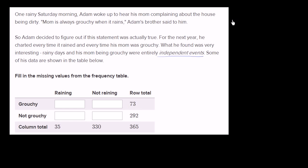Another way of saying that is the probability that mom is grouchy given it is raining should be equal to the probability that mom is grouchy in general.